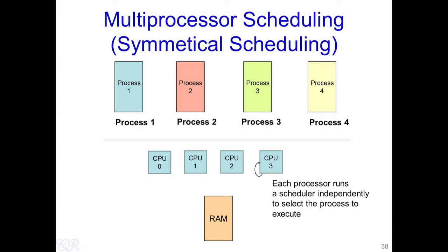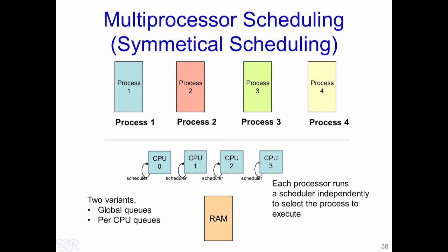Another multiprocessor scheduling scheme is the symmetrical scheduling scheme. Here, instead of a single CPU deciding for all processors, each CPU runs its own scheduler independently. Therefore, each CPU at the end of a time slice decides which process it is going to execute next. There are two variants of the symmetrical scheduling scheme: one with a global queue and the other with per-CPU queues.